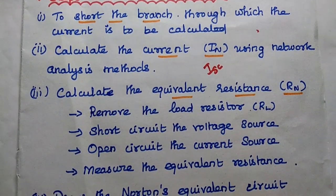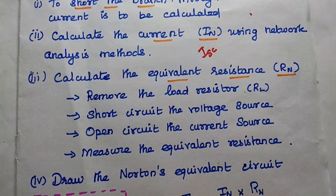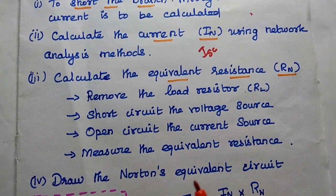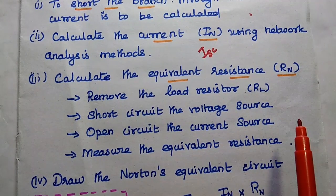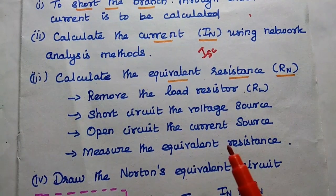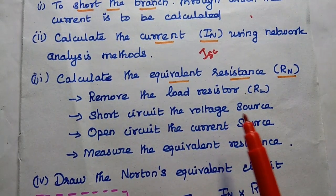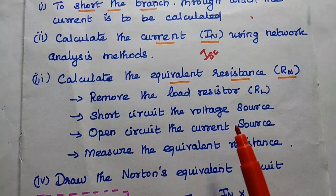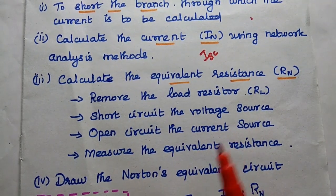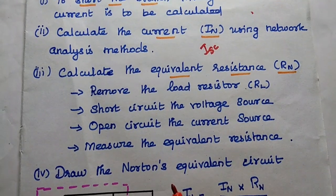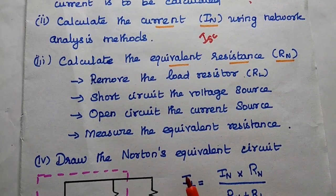After getting the short circuited current, we calculate the equivalent resistance, also known as Natan's resistance. For that, we remove the load resistor (the particular branch), short circuit the voltage source, open circuit the current source, and then find out the equivalent resistance of the circuit.